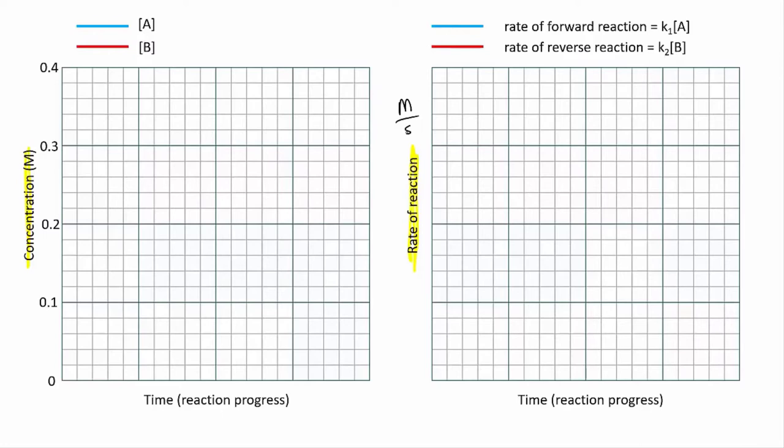Okay, so only A is present initially. So the concentration of A is high, and the concentration of B is zero. As the reaction proceeds, A gets used up, so its concentration drops, and B is produced, so its concentration climbs.